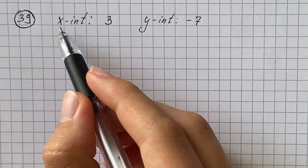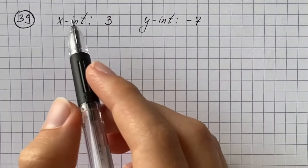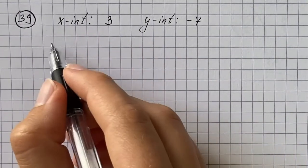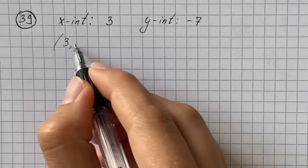So we have that line has x-intercept 3 and y-intercept is negative 7. So if line has x-intercept 3, it means that it goes through (3, 0).